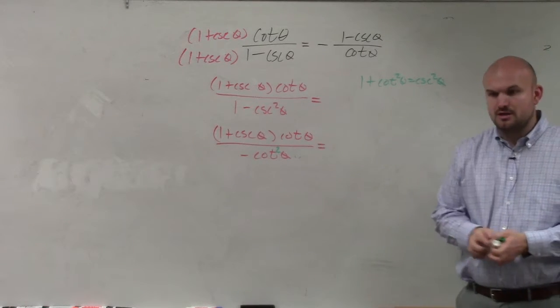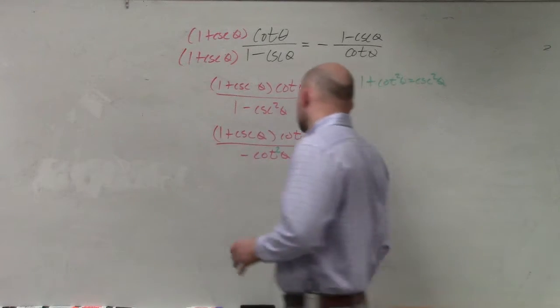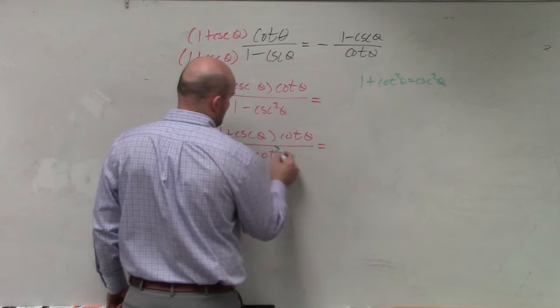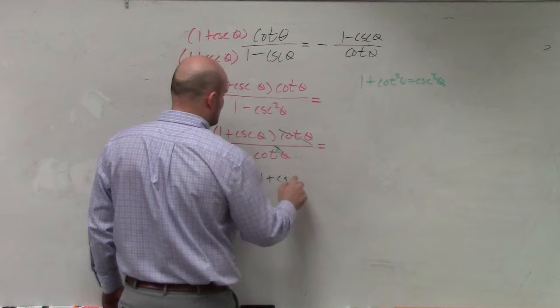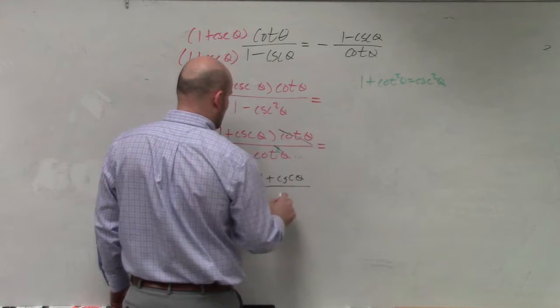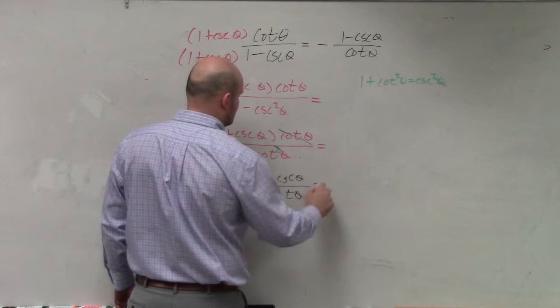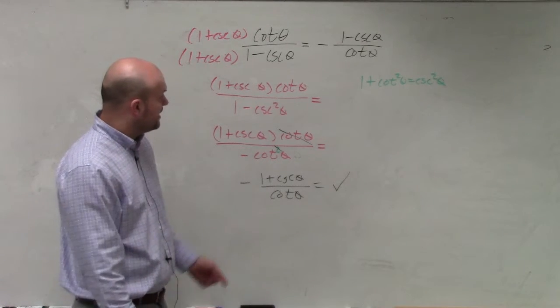Well, can I simplify these cotangents? Of course I can. So now, I'm left with a negative one plus cosecant of theta divided by cotangent theta, which is exactly what I have.